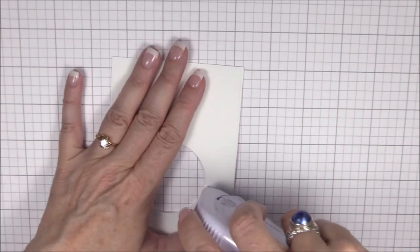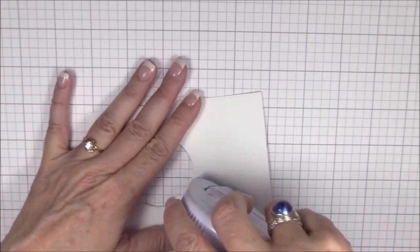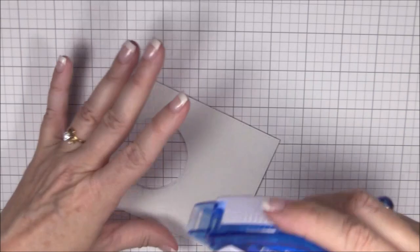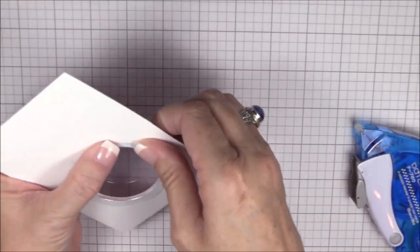I'm using my tape runner to apply some adhesive to the back of the polka dot panel around the outside edge of the aperture, and then I'll slide the circle treat pouch into place. With a little bit of pressure, it should be good and secure.